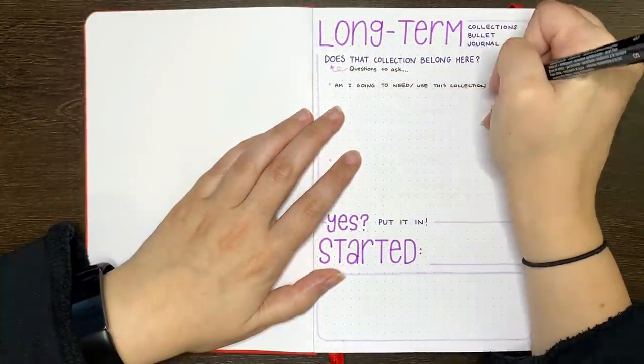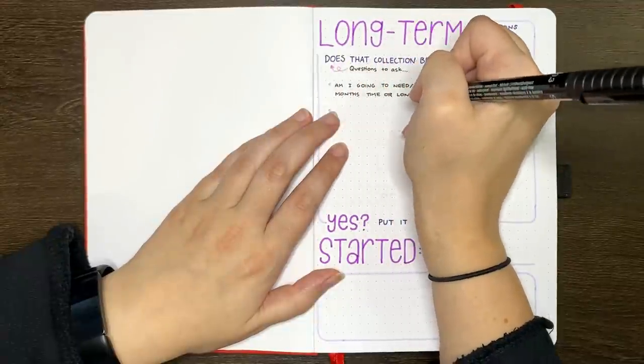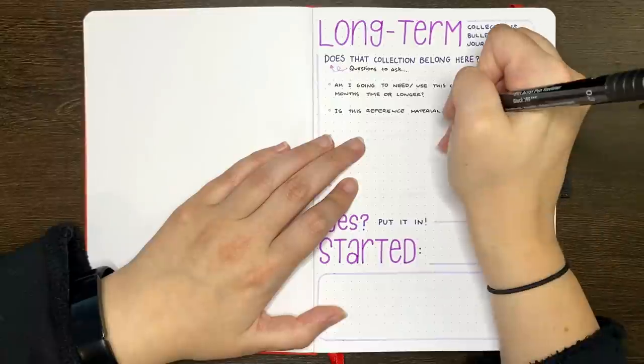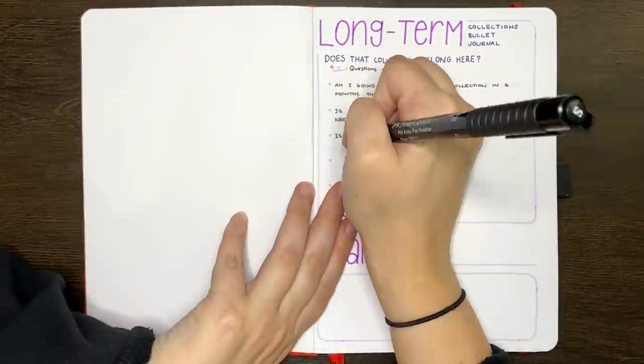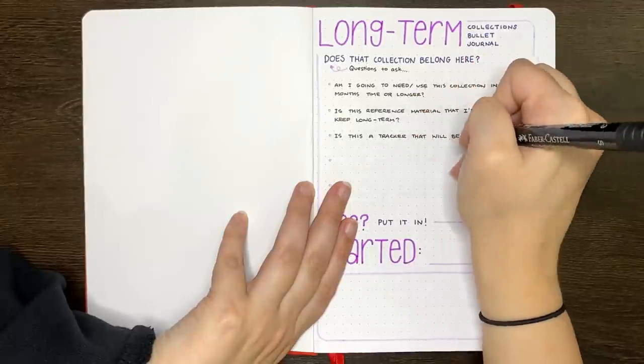You'll see as we go though, I use different colors for each layout, but they still work well together because of that common element. On this title page though, I'm just writing in some prompts for myself to think about when I go to make a new long-term collection.